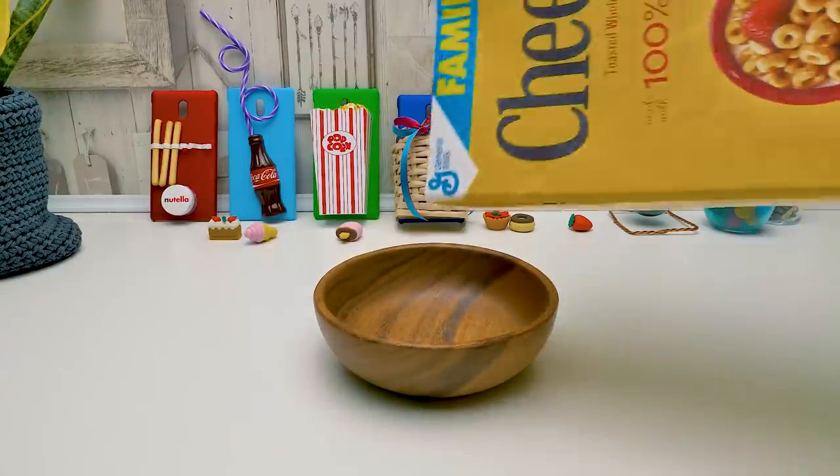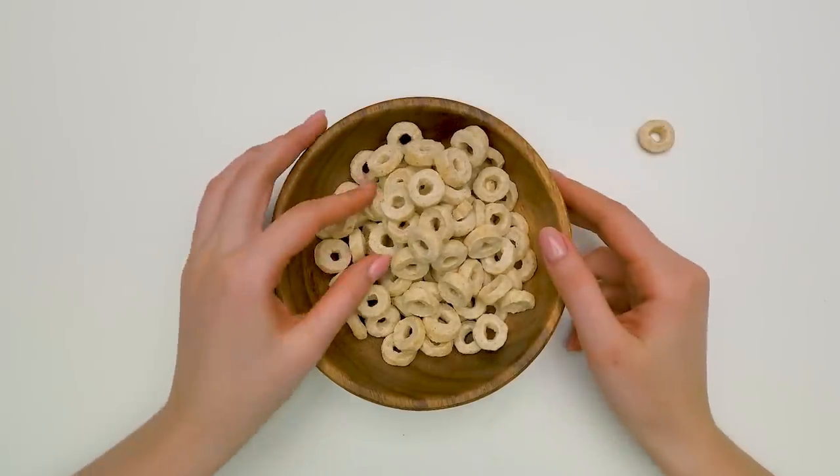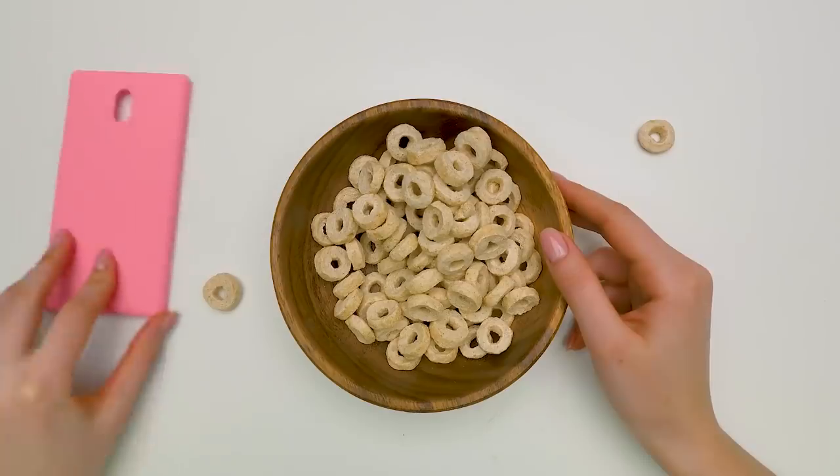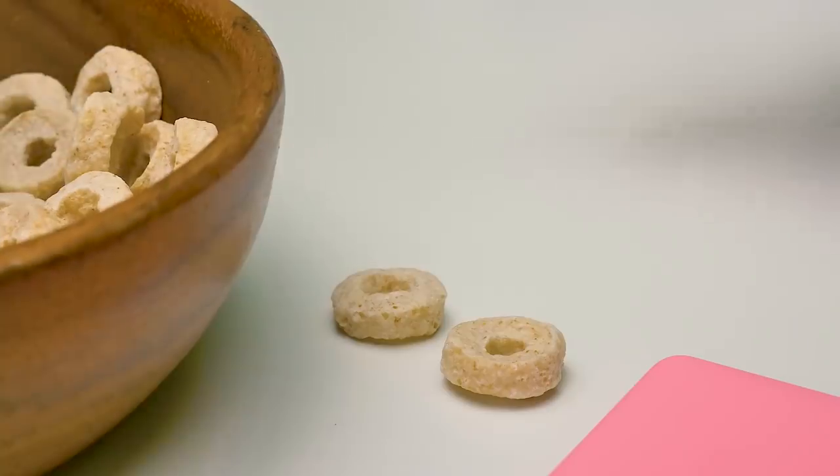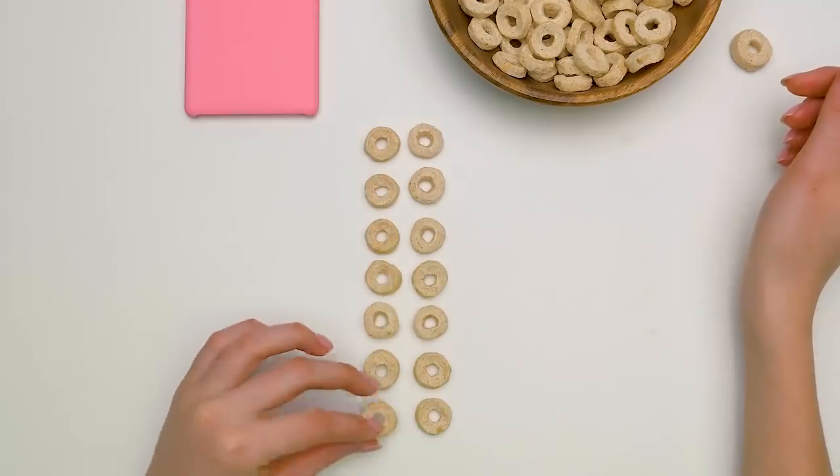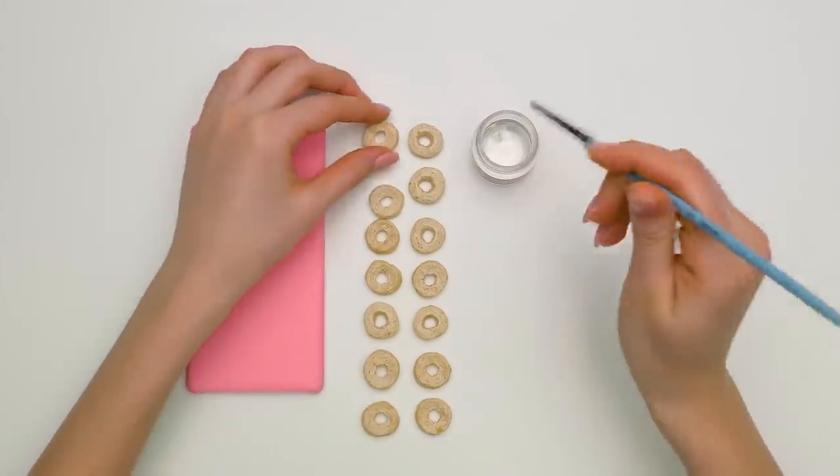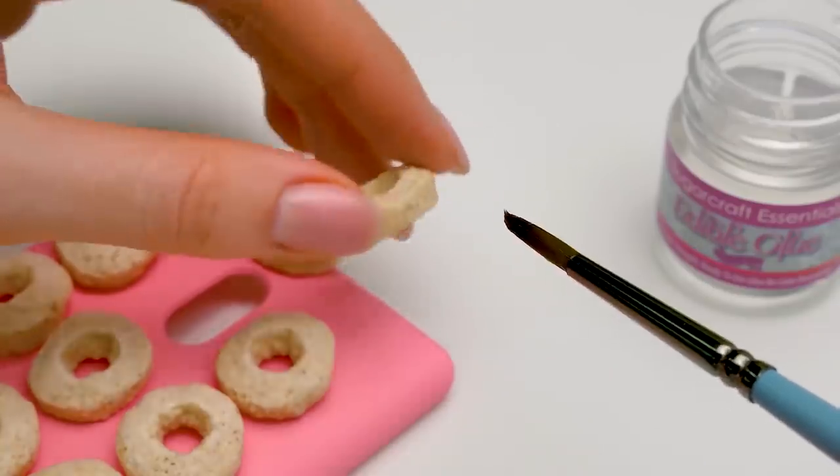I remembered another phone case idea this morning, when Sam scattered these cereal rings at breakfast. These rings look a lot like donuts. It's so easy to decorate them like that. Right? Well, first, I'll stick them to the phone case, using some edible glue. These rings are very fragile, so work carefully.